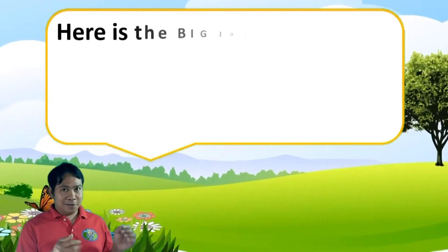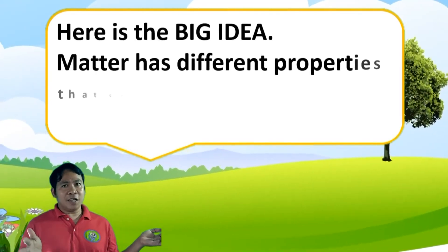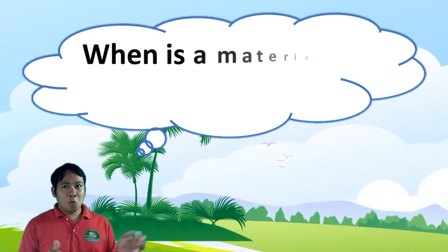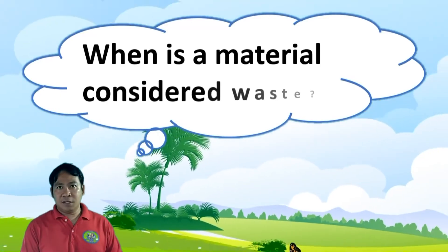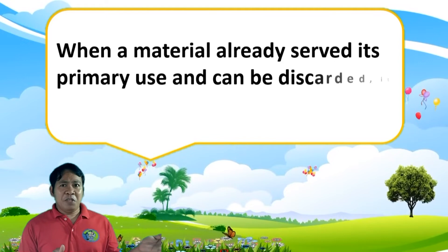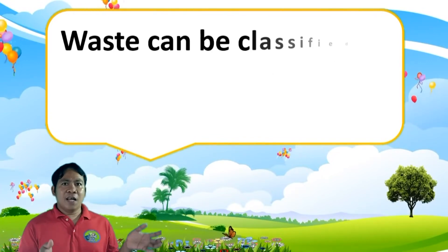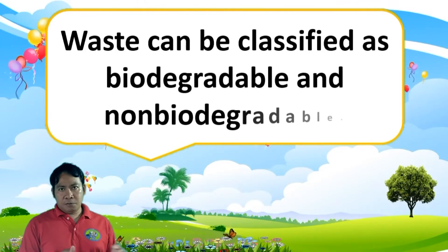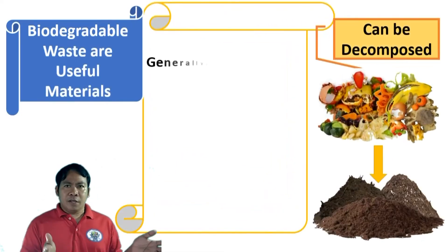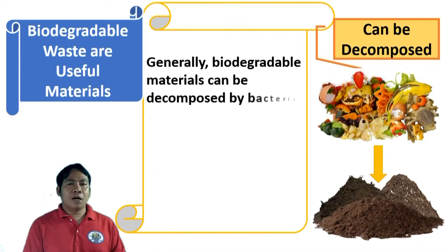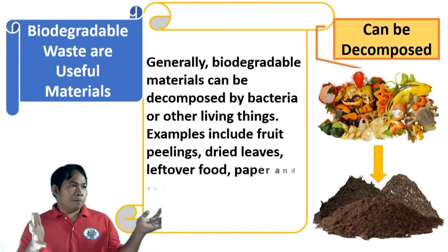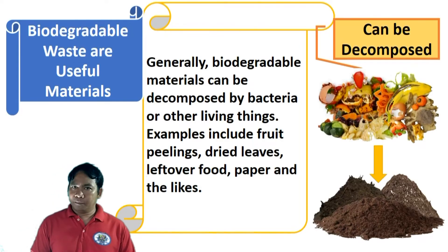Here is the big idea: matter has different properties that can be considered in order to minimize waste. When a material has already served its primary use, it can be discarded as waste. Waste can be classified as biodegradable and non-biodegradable. Biodegradable waste is useful waste — generally, biodegradable materials can be decomposed by bacteria or other living things. Examples include fruit peelings, fallen leaves, leftover food, paper, and linen. These can be decomposed by bacteria.